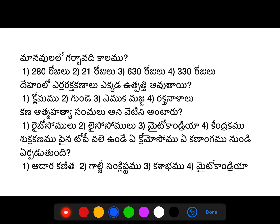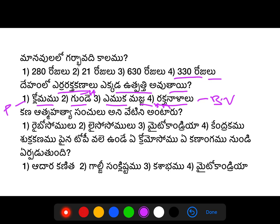There is a question about the gestation period of humans. Next question: where is RBC production? The options are Pancreas, the heart, bone marrow, and blood vessels. Bone marrow is the right answer.